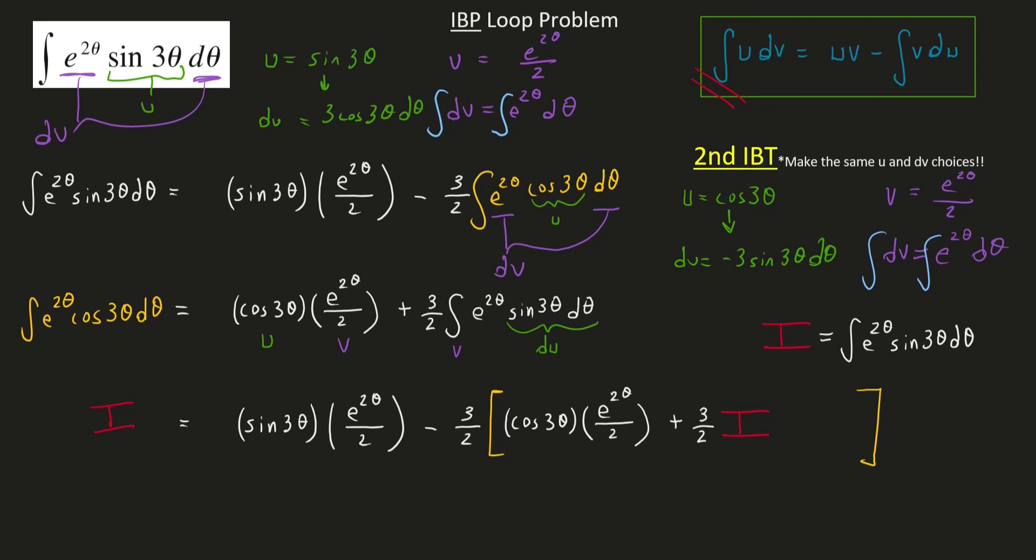So now I'm just going to work my algebra. I'm going to FOIL in this 3 over 2 into both of these quantities. Actually, yeah, negative 3 over 2.